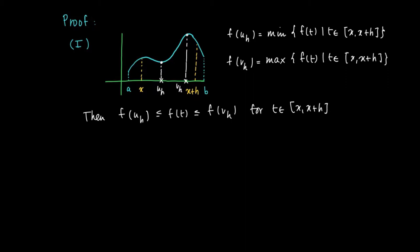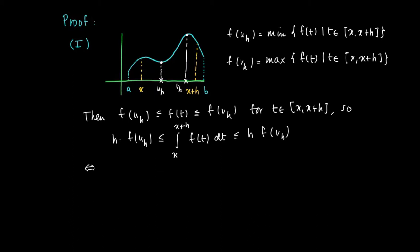So if we take the definite integral from x to x+h, then on the left-hand side we have a constant, giving h times f(u(h)), and the integral from x to x+h of f(t) dt is less than or equal to h times f(v(h)). Integrating a constant over a closed interval gives the length of the interval times that constant — that's what we applied on both sides.